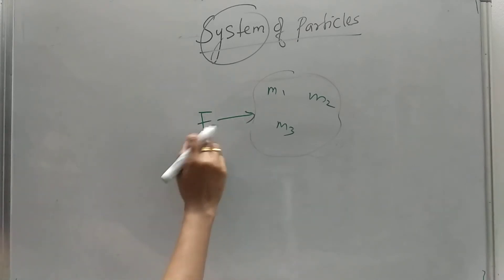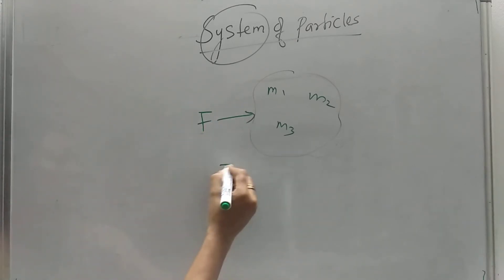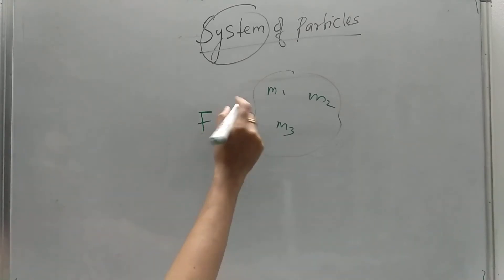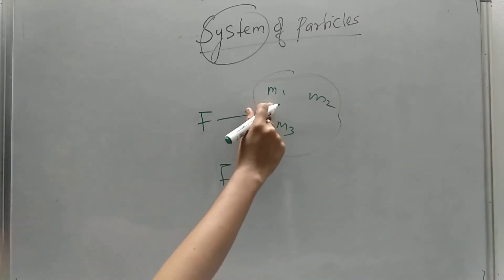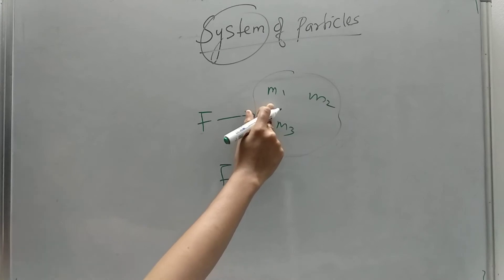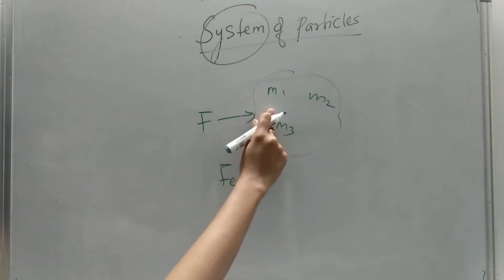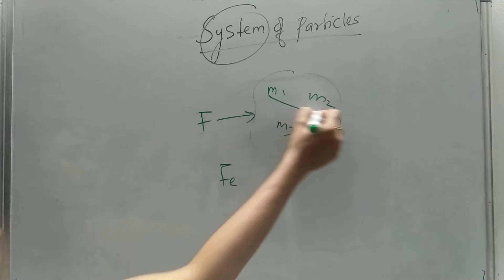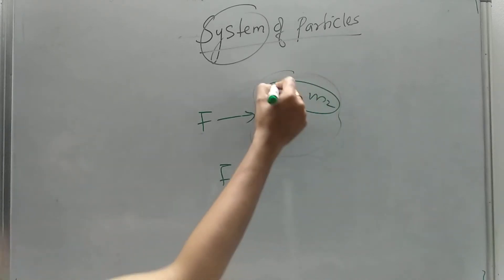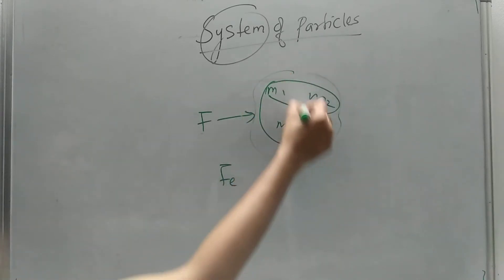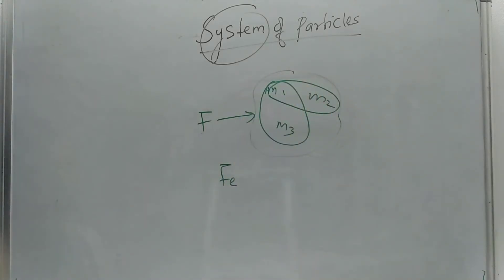What will happen when an external force is applied on the system? The particles may interact among themselves — among the other particles in the system. These are the particles that are interacting with each other.